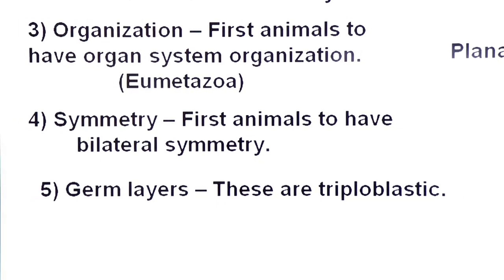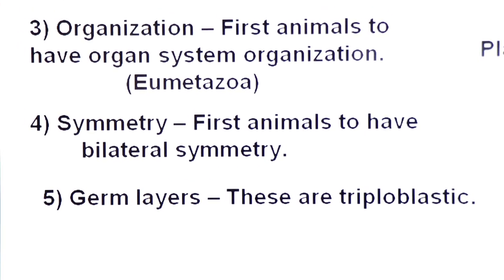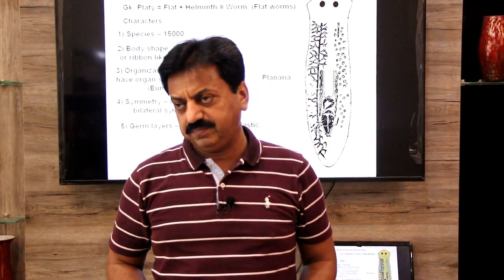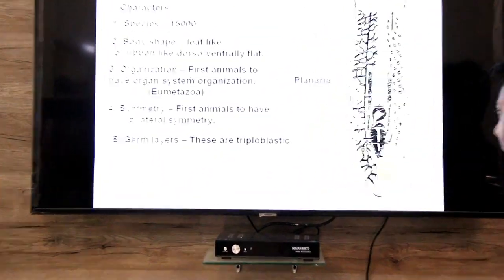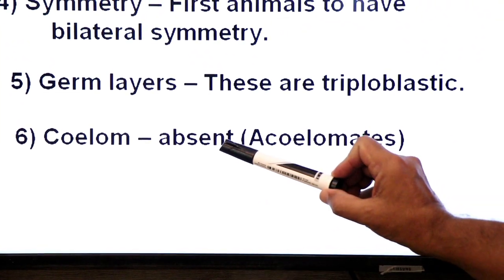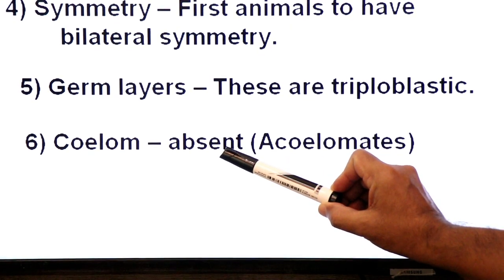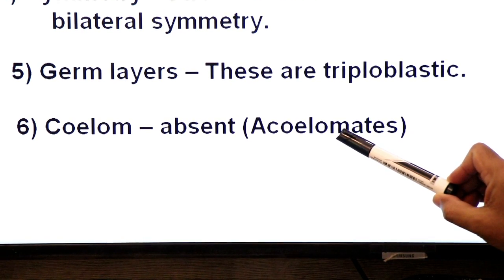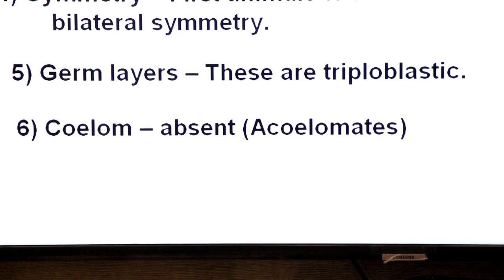Now germ layers. These are triploblastic animals, meaning their embryo has three germ layers: ectoderm, endoderm, and in between, mesoderm. Now coelom means body cavity. These are triploblastic animals in which the coelom is absent, so they are called acoelomates. 'A' means without, 'coelom' means body cavity — the coelom is absent in these triploblastic animals.